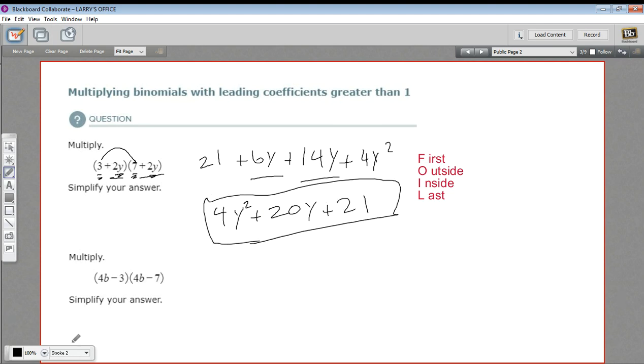All right. Let's try another just for practice. So the first terms, 4b times 4b. 4 times 4 is 16, b times b is b squared.